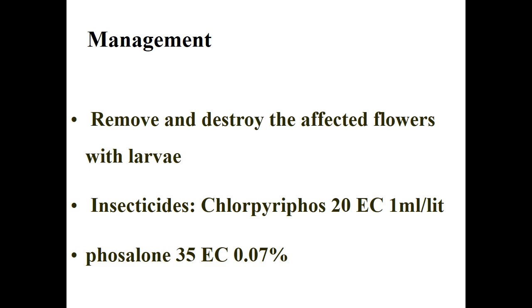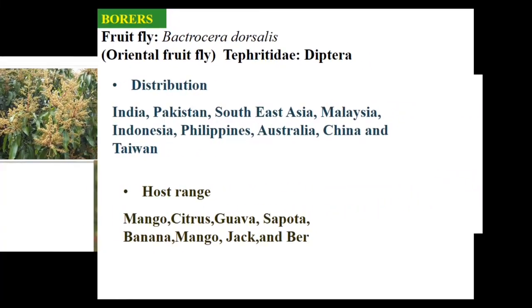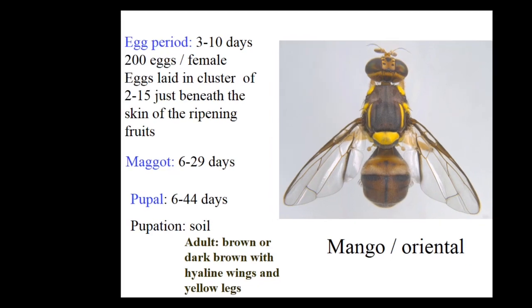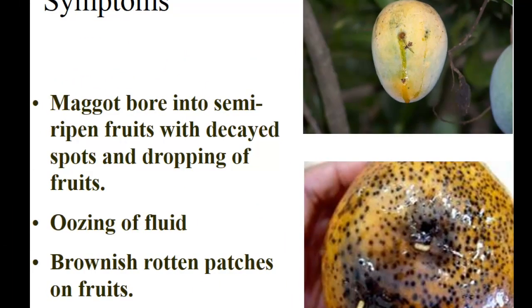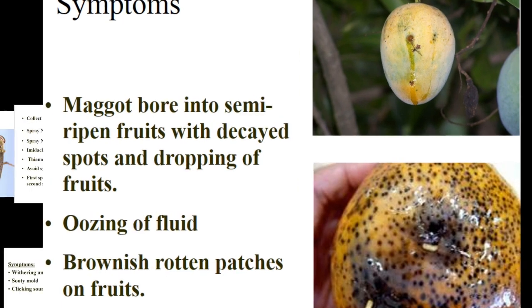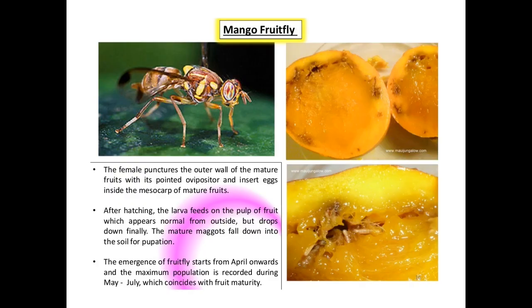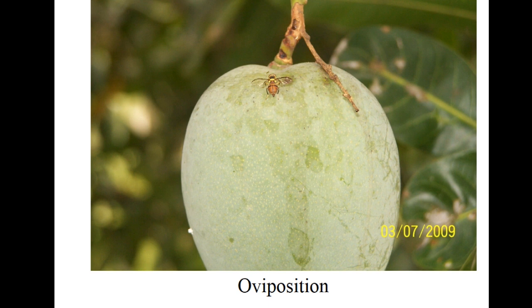Coming to fruit fly — Bactrocera dorsalis, family Tephritidae, order Diptera — otherwise called oriental fruit fly. The female punctures the outer wall of matured fruits with its pointed ovipositor and lays eggs inside the mesocarp. After hatching, larvae feed on the fruit pulp, which appears normal from outside but eventually the fruit drops. The matured maggot falls to the soil for pupation.